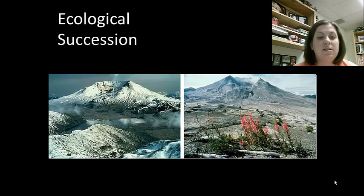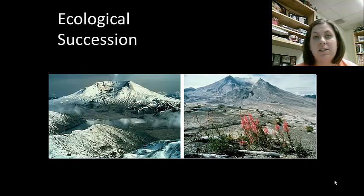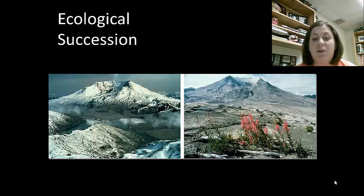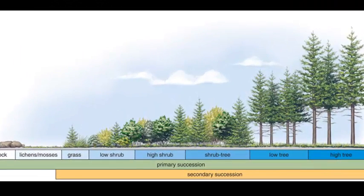Ecological succession is a progressive change in the composition and diversity of the community over time after a disturbance. There are going to be changes in these living organisms after some disturbance happens. The disturbance causes a regrowth or rebuilding of a community, and this regrowing occurs in a series of steps, beginning first with grass and weeds, then shrubs, then small trees, and then larger trees.